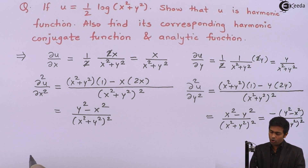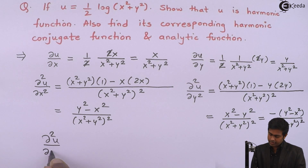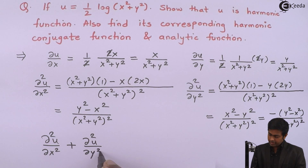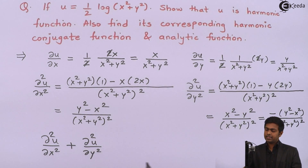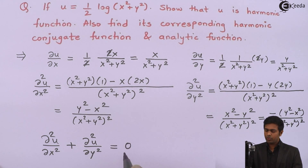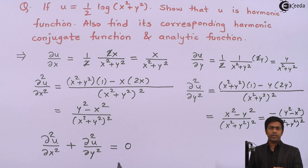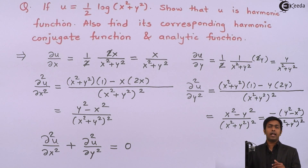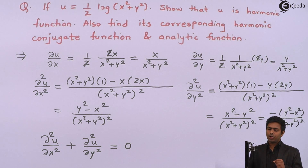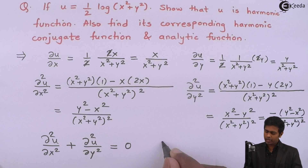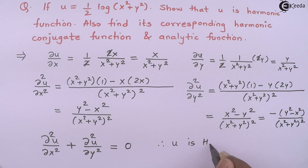If you observe ∂²u/∂x² and ∂²u/∂y², they are exactly the same but opposite in sign. So adding both gives 0. Since the sum of these two second-order derivatives is 0, u satisfies the Laplace equation. Therefore, u is a harmonic function.